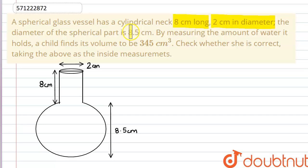And the diameter of the spherical part is given as 8.5 cm. So by measuring the amount of water it holds, a child finds its volume to be 345 cm cubed. Check whether she is correct, taking the above as the inside measurements.